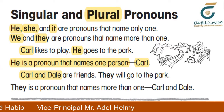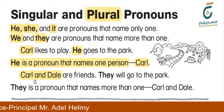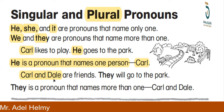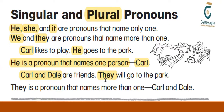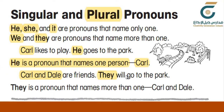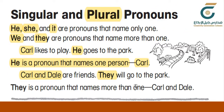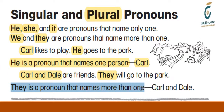Another example: Carl and Dale are friends. We can point to them and say they. They will go to the park. They is a pronoun that names more than one — Carl and Dale.